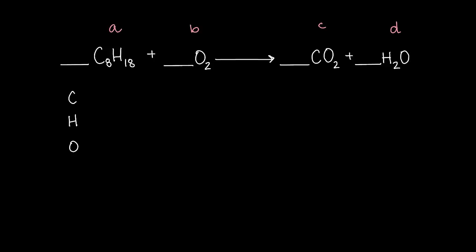The reaction arrow will have an equal sign on top of it — you'll see why in just a moment. Off to the side, write the variables again: A, B, C, and D. Now we find how many moles of each element we have per term. We have 8 moles of carbon for A, so 8A. On the reactant side there's no more carbon, so we cross the reaction arrow — that means equals — and on the product side, carbon has 1 mole in the C term. So 8A equals C.